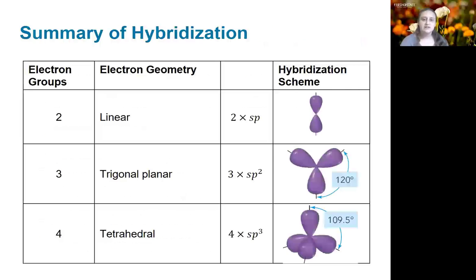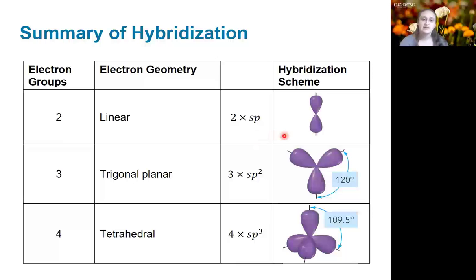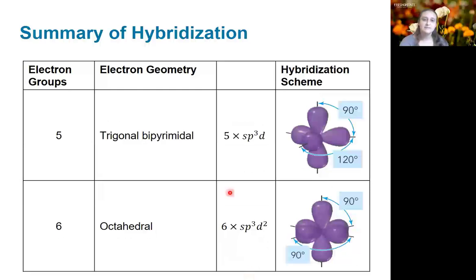Here's a quick summary of the hybridization schemes we looked at. Depending on the number of electron groups you have, that's how many hybrid orbitals you're going to need. With two groups, we mix two orbitals to get two hybrid orbitals — that's sp. Here are the sp2 and sp3 shapes. We can also get up to five and six groups by incorporating d orbitals. That's all for now, and I hope to see you again shortly as we discuss more about bonding.